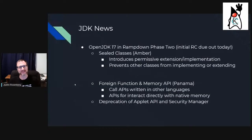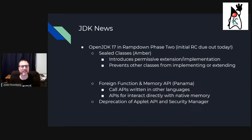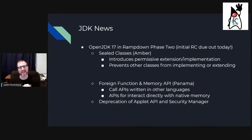Java News: OpenJDK 17 is in Rampdown Phase 2. It includes Project Amber, which introduces sealed classes to prevent other classes from implementing or extending them, and adds permissions for some things. Also Project Panama, the foreign function and memory API, which allows you to call APIs not written in Java and interact with native memory directly. And of course, deprecation of the Applet API and Security Manager.